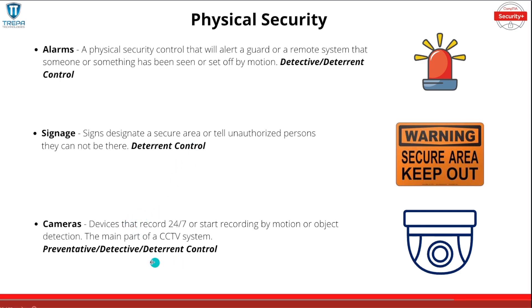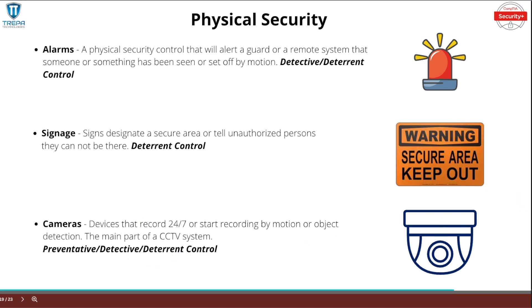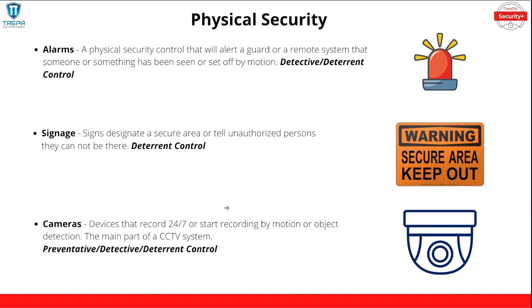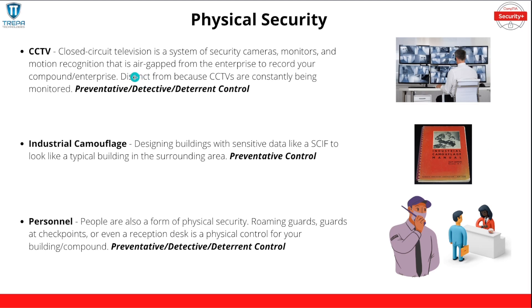Cameras, as part of a CCTV system, are preventative, detective, and deterrent controls. Don't ask me why they're preventative — just ask CompTIA. Cameras can't physically stop you, but they can serve as detection and deterrent controls. CCTV — closed circuit television — is a system made up of security cameras, monitors, motion recognition, and typically a person monitoring those feeds. CCTVs are preventative, detective, and deterrent. Preventative because the person watching can alert a security or roaming guard to physically stop someone. Detective because it's being monitored. Deterrent because a threat actor wanting to enter your compound unauthorized may see that CCTV system and think otherwise.